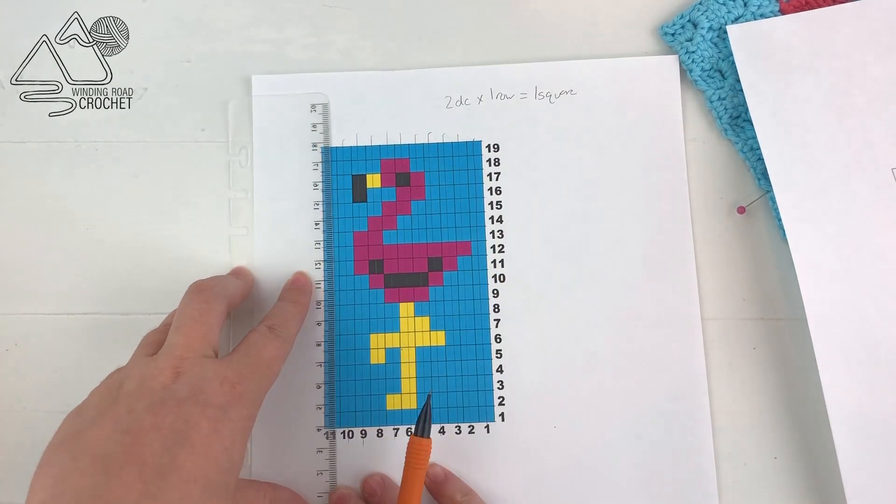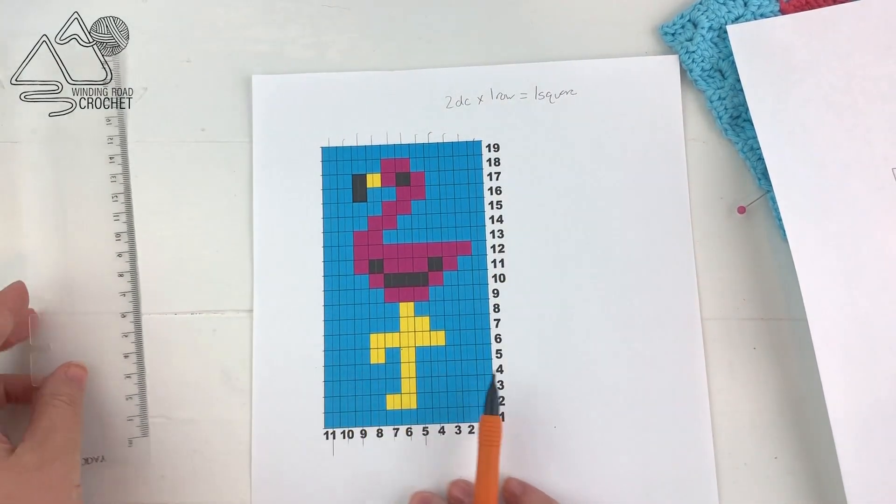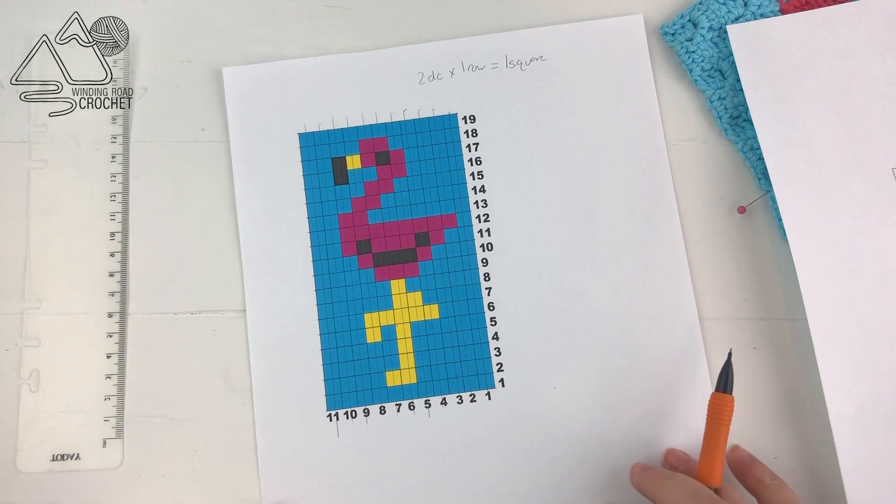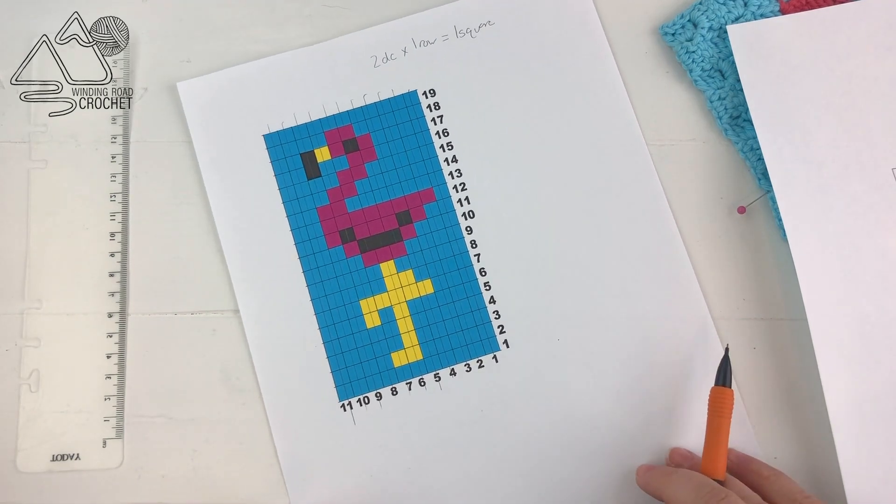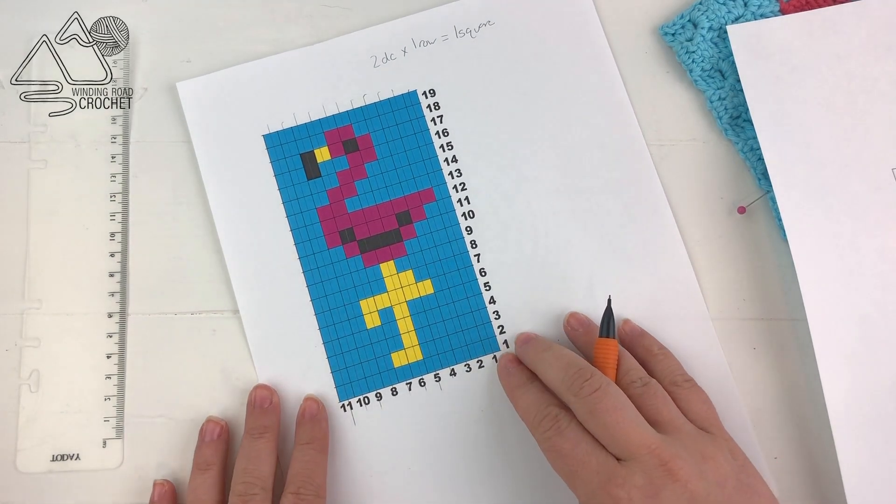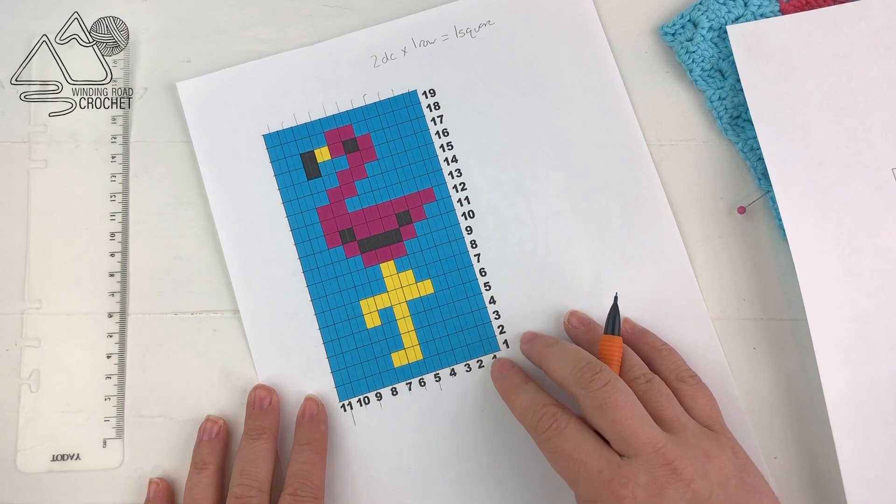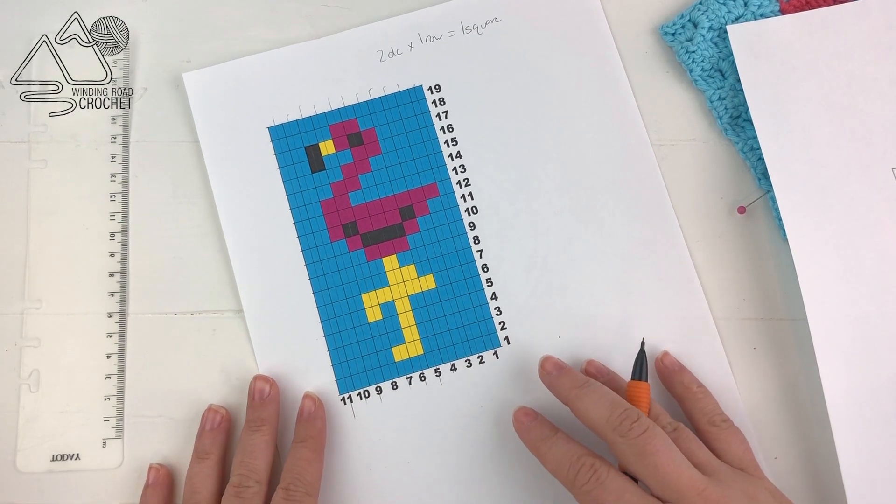So after we've added extra lines to our graph, our next step is going to be writing the basic pattern for this project without taking the color changes in mind.